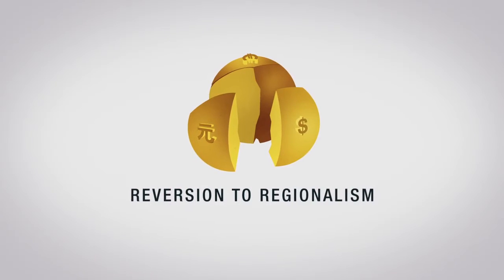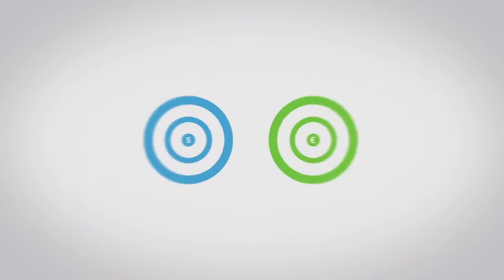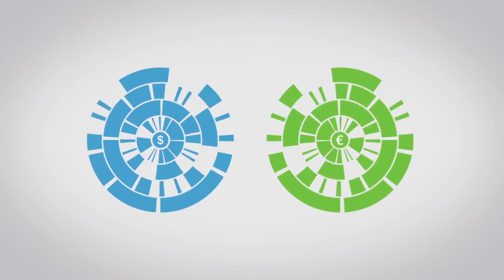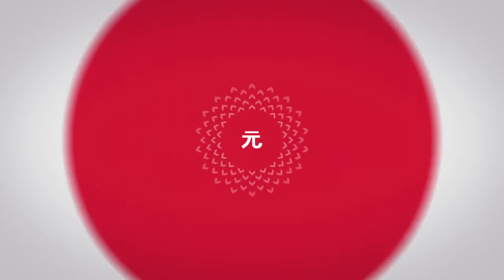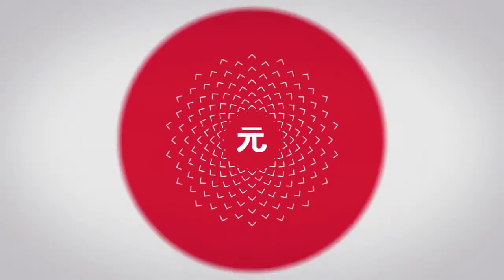Scenario one, reversion to regionalism. The US and Europe's financial troubles continue and both become more inward-looking. Global exports slow down dramatically, stalling China's growth.